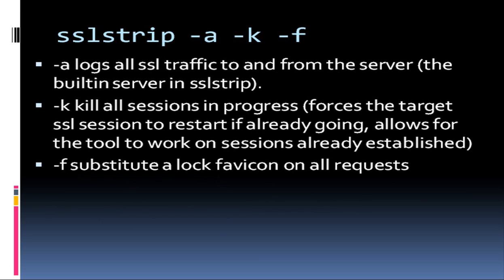Then we fired up SSL strip. We passed the dash-A option — this is a little A — it logs all SSL traffic to and from the built-in server in SSL strip. We passed the dash-K option: kill all sessions in progress. If there's already an SSL session established, it's going to kill that one and force a reestablishment, which allows us to do the hijack. And the dash-F option allows us to send a lock favicon on our requests — so the victim should still see the little lock that makes them think they're communicating SSL, even though they're not.